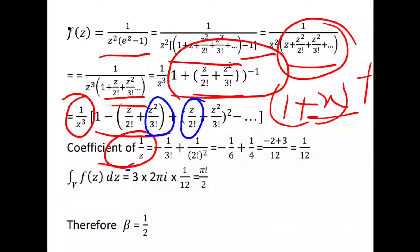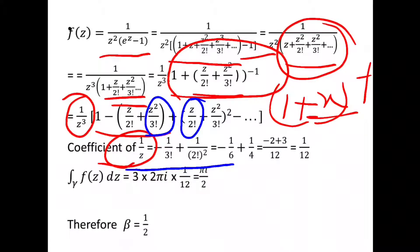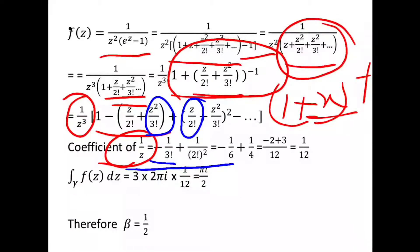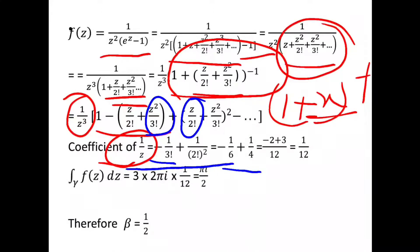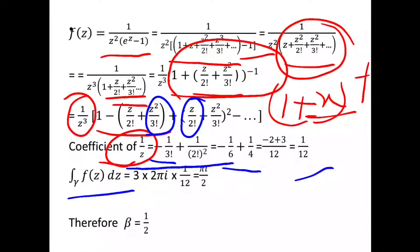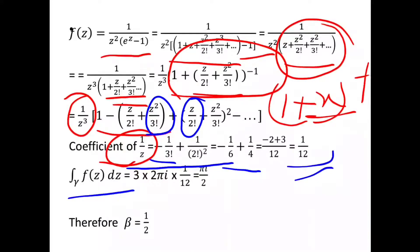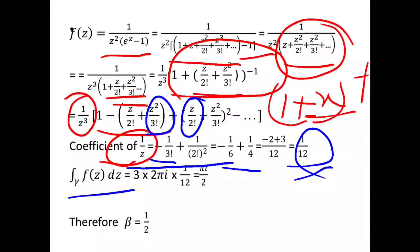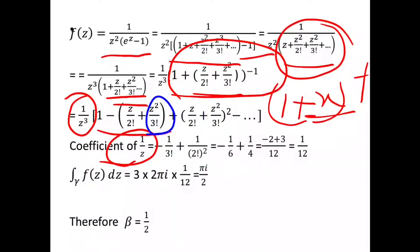Now coefficient of 1/z: these terms and this term squared, z²/(2!)² gives the coefficient of 1/z, that is 1/(3!) and 1/(2!)² minus 1/(3!) = -1/6 + 1/4 = 1/12. So the integration equals 2πi × residue (1/12) × winding number (3).